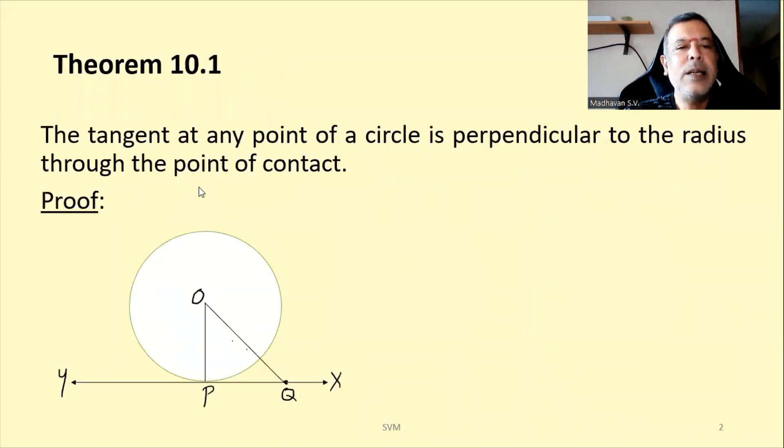Now a theorem. The tangent at any point of a circle is perpendicular to the radius through the point of contact. We are considering the circle here, O is the center of the circle. Then OP becomes the radius and we are considering the tangential line XY here. So we need to prove that OP is perpendicular to XY.